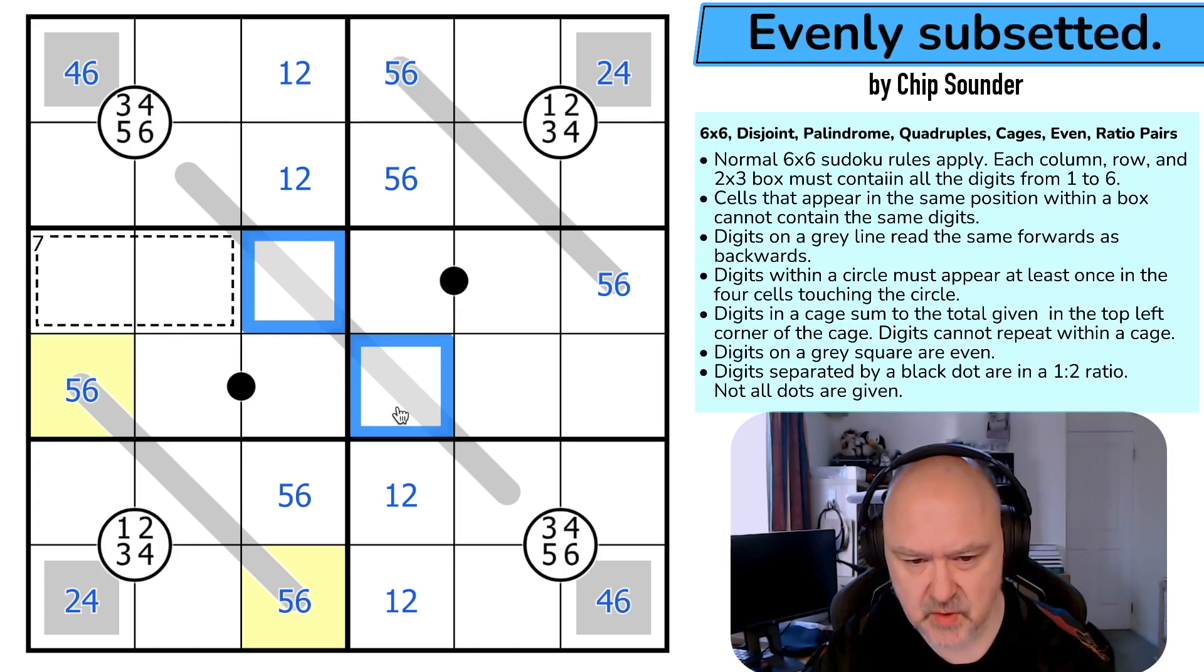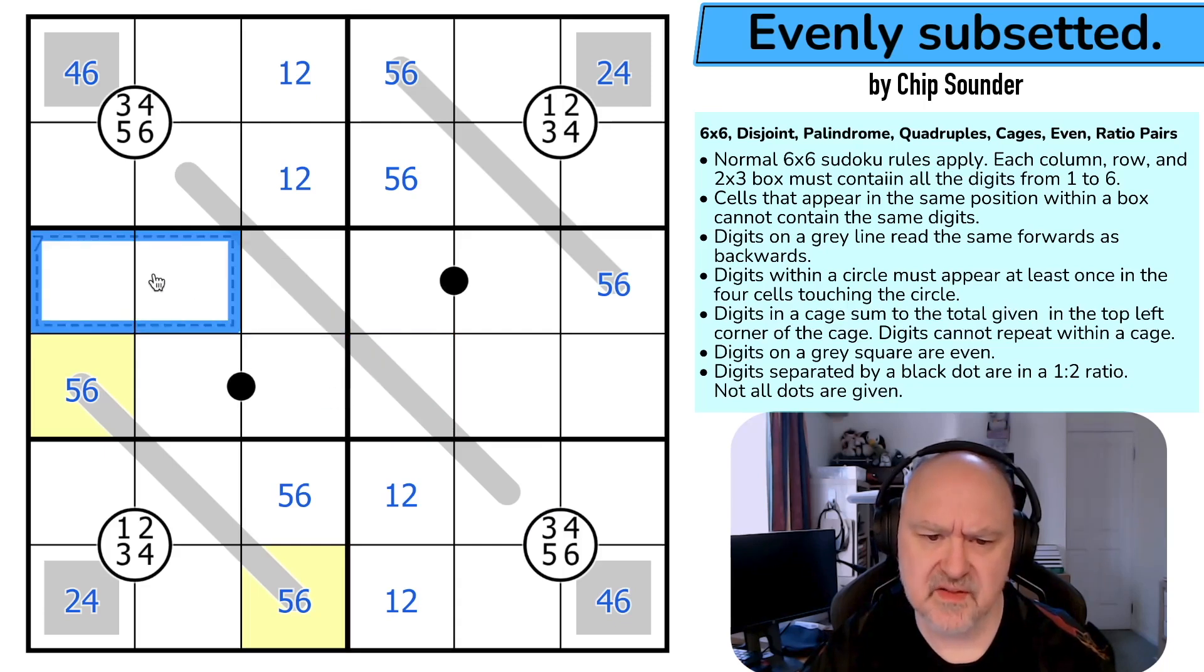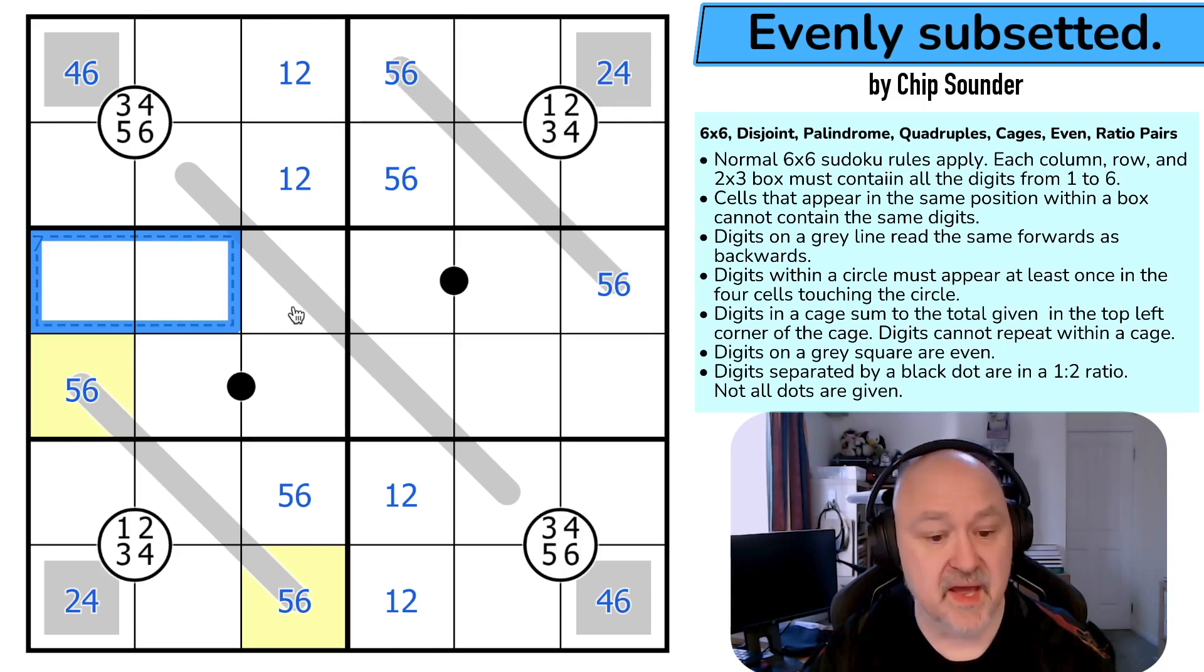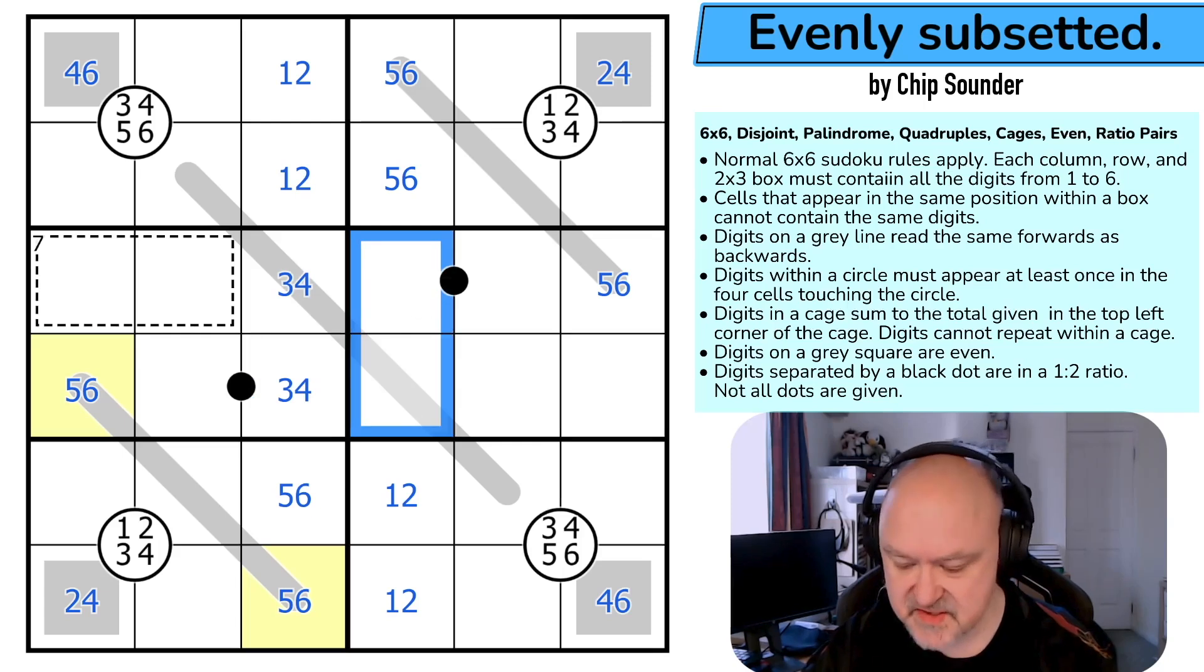I feel it's got to be this 7 cage, but this could be 1, 6, making both of those 5, or 2, 5, making both of those 6, or 3, 4. It can't be 3, 4. Use quadruples. This is 3, 4. This is 3, 4. And these are the same digits. 1, 2, 5, 6. These were 3, 4s.